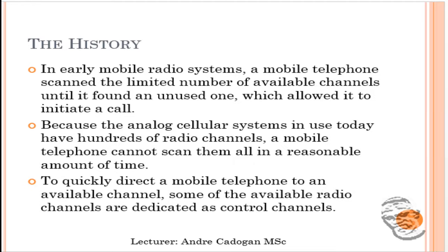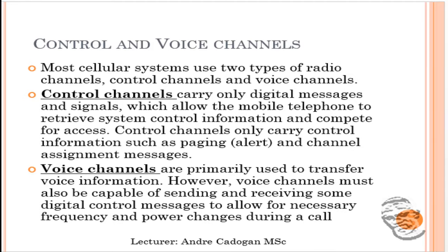Because analog cellular systems use hundreds of radio channels, a mobile telephone cannot scan them all. Instead, it scans available channels through a dedicated control channel. There are two different types of channels: control channels and voice channels. Control channels carry only digital messages. Even though 1G is primarily analog in nature, it still has some form of control information being channeled via a control channel.